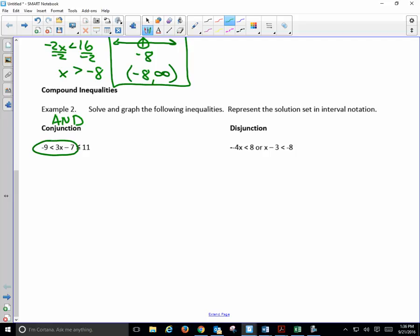So we want to solve and graph these. A conjunction is an and situation. So a conjunction is able to join two inequalities together, meaning that there will be an intersection between their sets. Now when I set these up, I grab that one. So negative 9 is less than 3x minus 7.